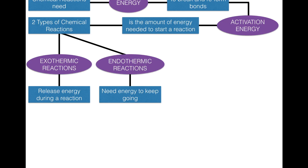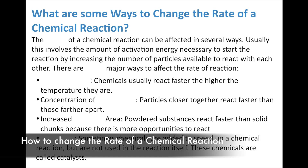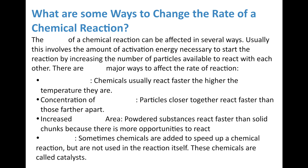Endothermic reactions need energy to keep going; exothermic reactions release energy during a chemical reaction. Now let's talk about some ways to change the rate of a chemical reaction. The rate or speed of a chemical reaction can be affected in several ways, usually involving the amount of activation energy necessary to start the reaction by increasing the number of particles available to react with each other. There are four major ways we can do this.